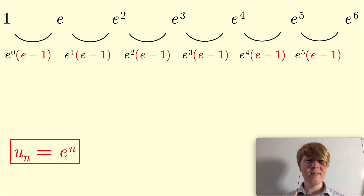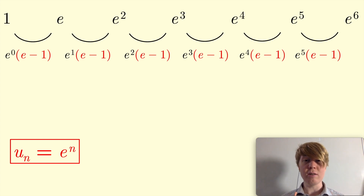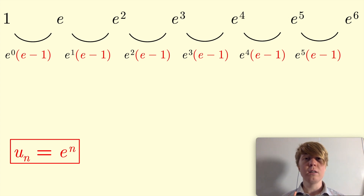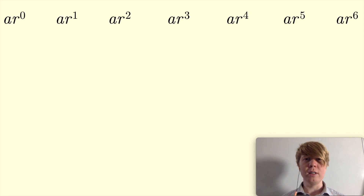What we're looking for is basically a sequence where the differences between each successive term, when you look at the sequence of those differences, gives you back your original sequence. We've almost got that here, but we've got these nasty e minus 1 terms, so we don't want those. So next we'll have a little bit of an explore.